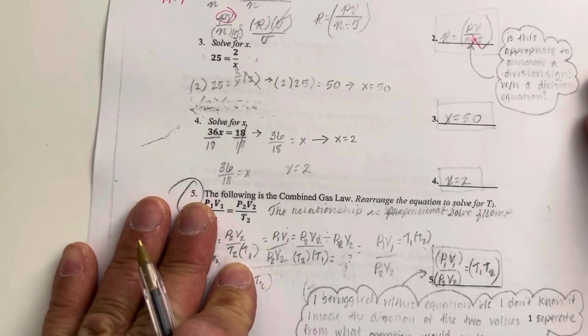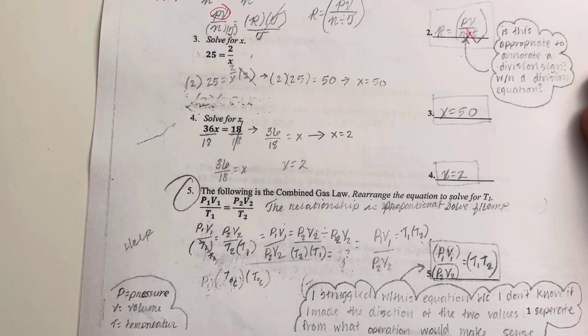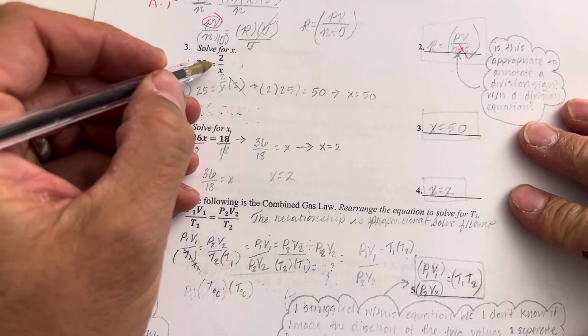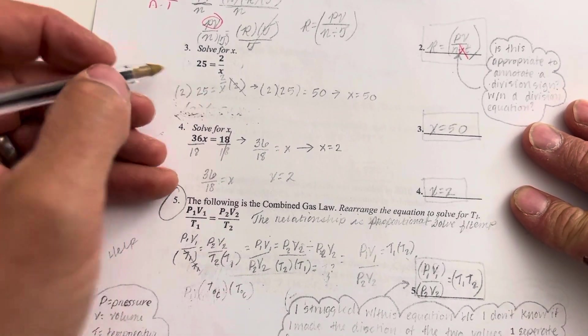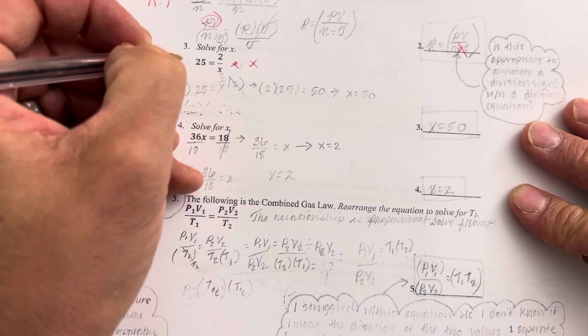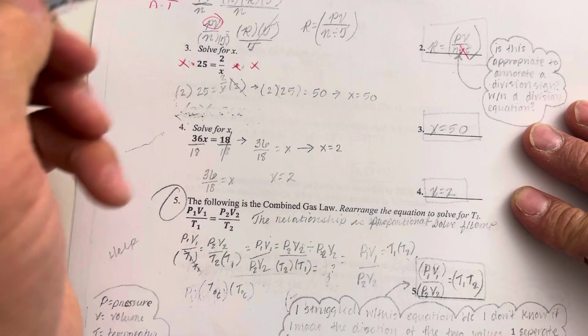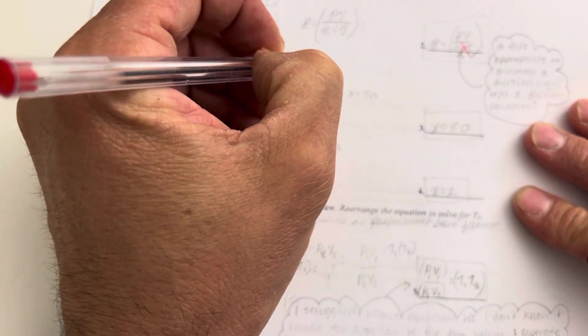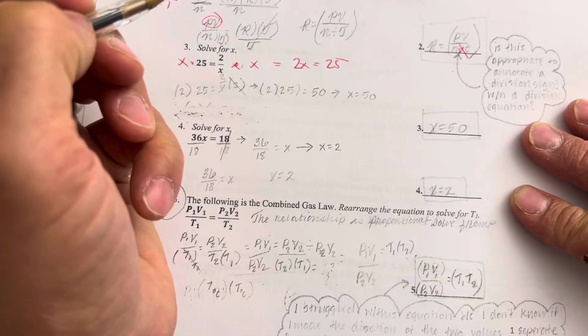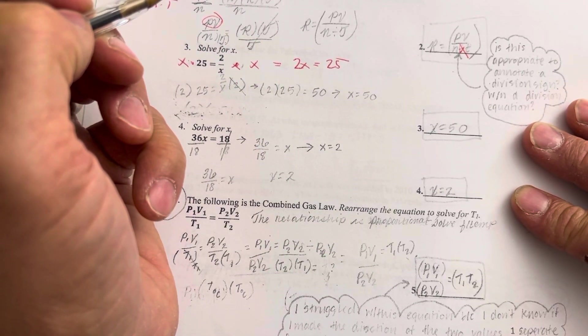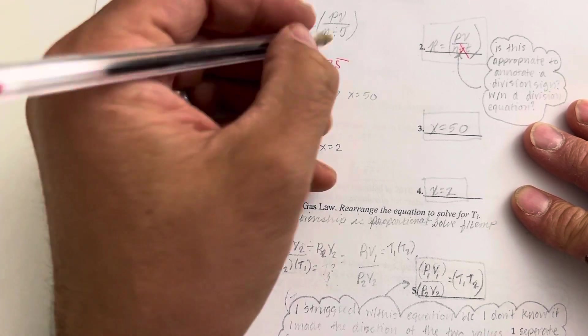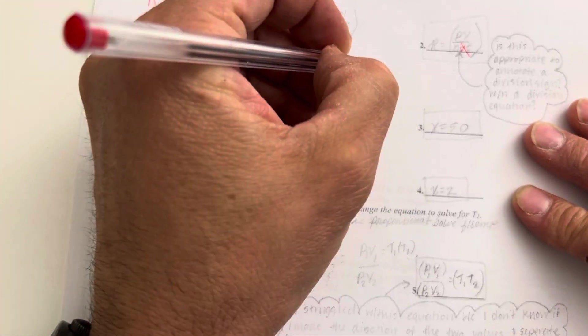After that one, we have solve for x. So 25 is equal to 2 over x, so you would rearrange that formula. You would multiply by x on this side, multiply by x on this side. That would give you 2x is equal to 25. So after we do that, we would end up with 2 is equal to 25x.